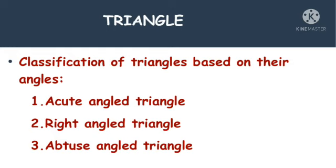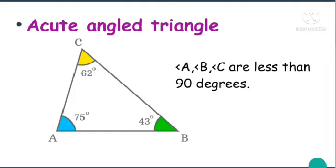Now we will see classification based on angles — there are three types. In an acute angle triangle, all angles are acute, meaning below 90 degrees. If you see this triangle, all the angles are less than 90 degrees, so these types of triangles are called acute angle triangles.